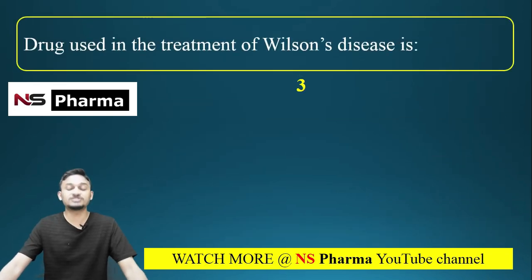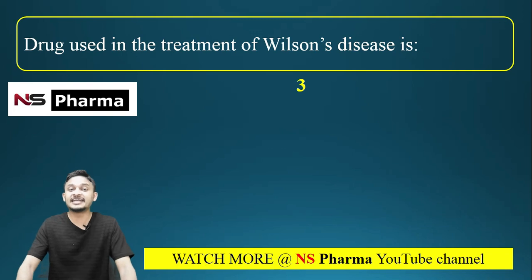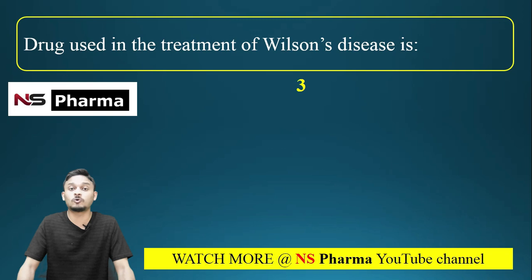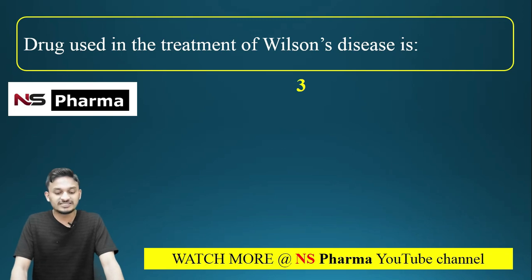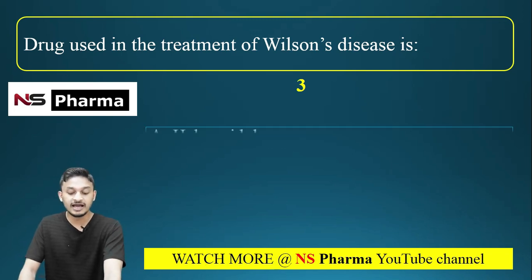Question number 3: Drug used in the treatment of Wilson's disease. Wilson's disease is a genetic disorder that causes a high amount of copper in the body, or copper poisoning. Which of the following drugs is used in its treatment? Options are: option A, option B, propranolol; option C, benztropine; option D, penicillamine.